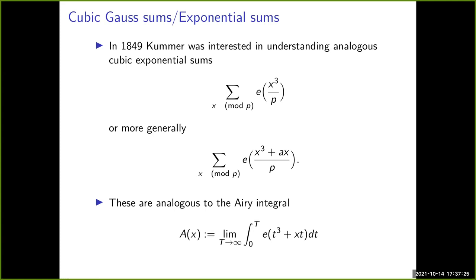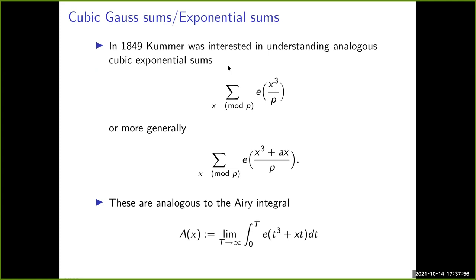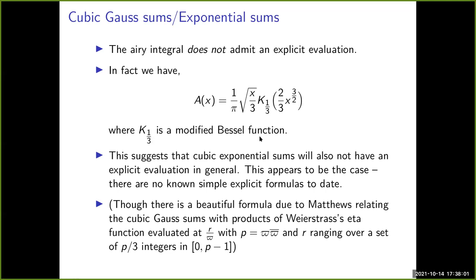These analogies have real substance. With the Airy integral, you cannot evaluate it at any x other than zero; in general there is no explicit formula, and the Airy integral equals a K-Bessel function with exponent 1/3. By analogy, you can guess that the cubic Gauss sum will also not have a closed form, and this guess seems vindicated — Kummer tried to find a closed formula and could not.